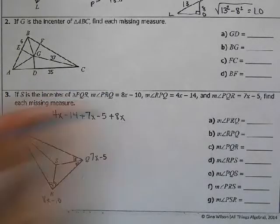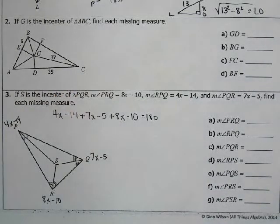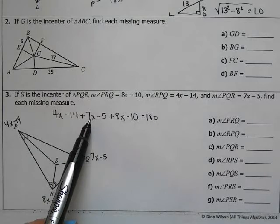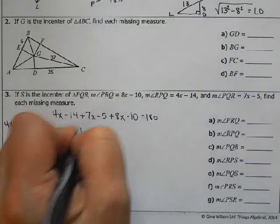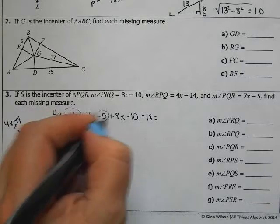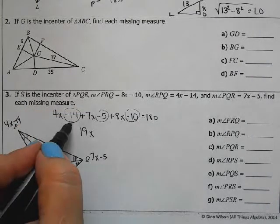So all of our prior knowledge is still going to have to be able to be found and used when we do these problems. So 4x plus 7x is 11x, plus 8x is 19x. Then we have minus 14, minus 5, minus 10. So that would be minus 29 equals 180.